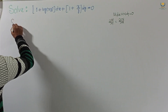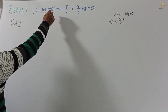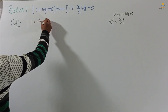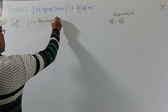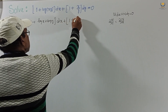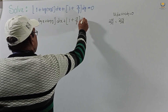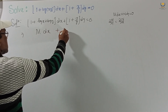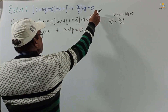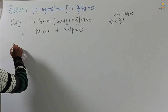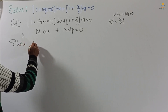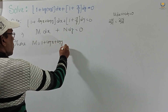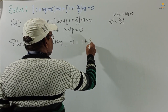Rewriting this: 1 plus log(xy) — that is log x plus log y — dx plus (1 plus x/y) dy equals 0. This is in the form M dx plus N dy equals 0, where M equals 1 plus log x plus log y, and N equals 1 plus x/y.